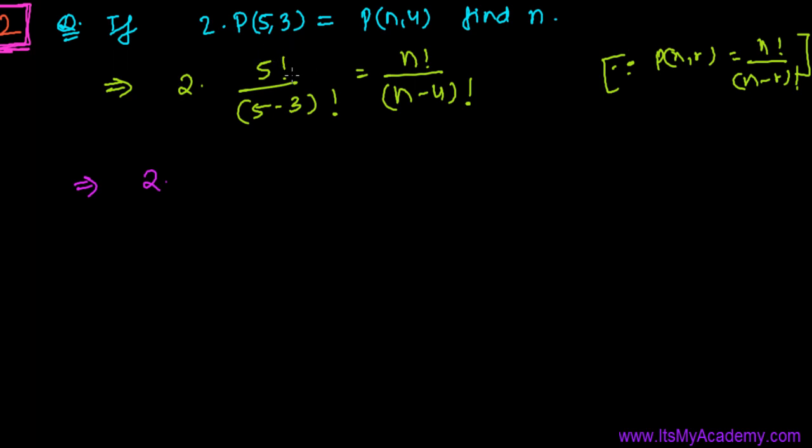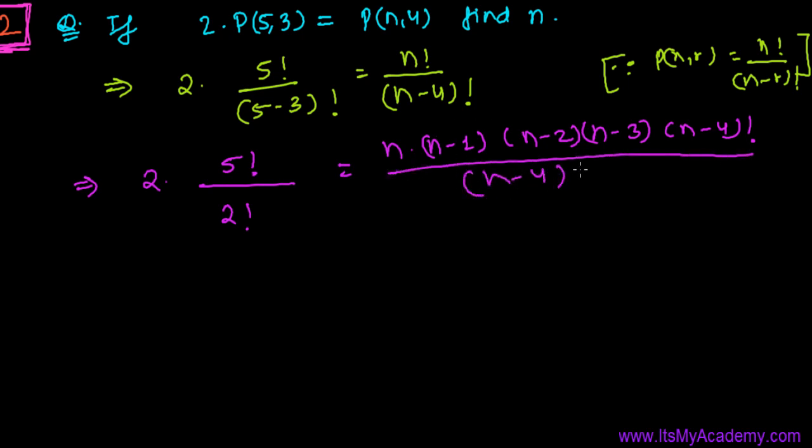If you want then you can proceed this 5 factorial or not. It's your wish because we have another option to cancel also. So 5 minus 3 is 2 factorial, and further you have n minus 4. Let me tell you one thing, n minus 4 is smaller than n, so you can reduce this n as n times n minus 1 times n minus 2 times n minus 3 times n minus 4 factorial. Now you just get it stopped, and in the denominator you have n minus 4 factorial.